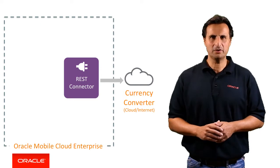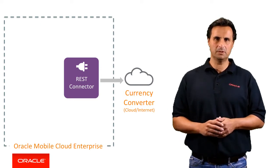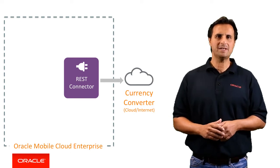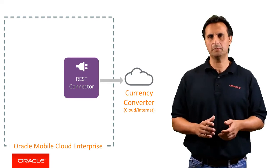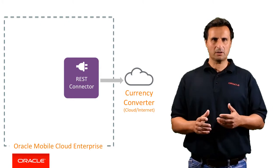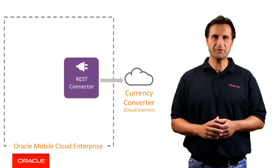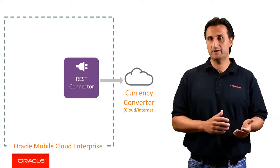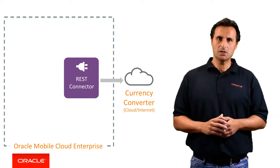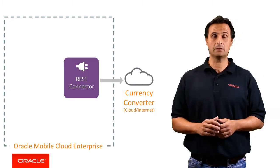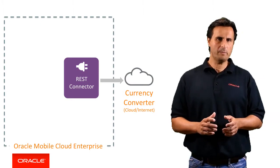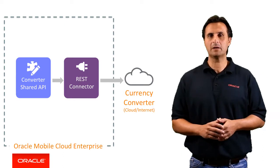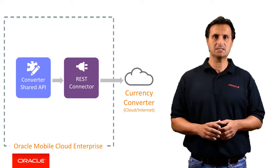If you're a developer, you certainly heard about the DRY principle, which means don't repeat yourself when you're writing code. And I think we should take the same recommendation on board when building custom components. The currency converter is a good example of functionality that might be shared with other applications — on-device mobile applications or even web applications. So instead of accessing the REST connector directly from our custom component, we better consider adding a shared API layer.